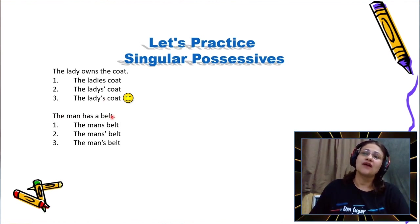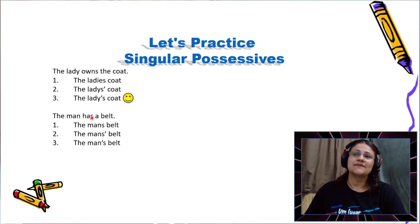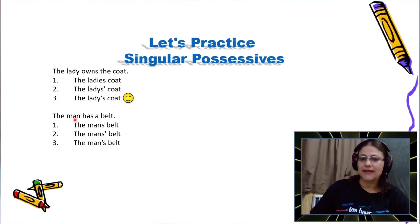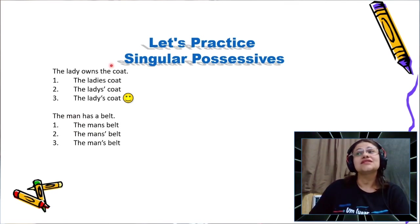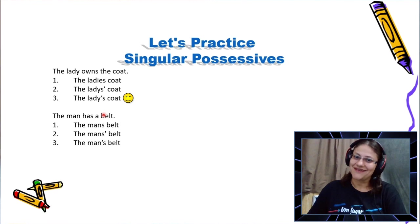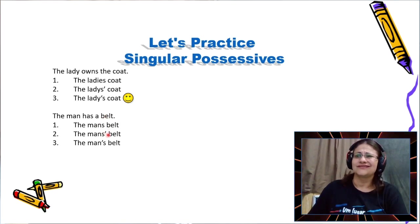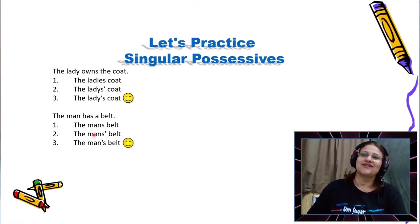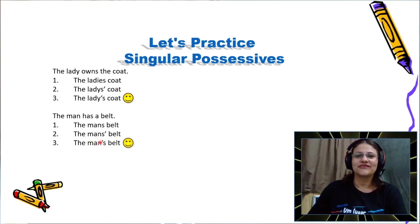Another example: the man has a belt. This belt belongs to the man. Man is a singular word, so I have to put the apostrophe and an S. The correct answer is: the man's belt — because for a singular noun we just add apostrophe and an S.